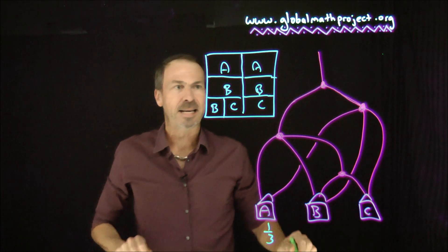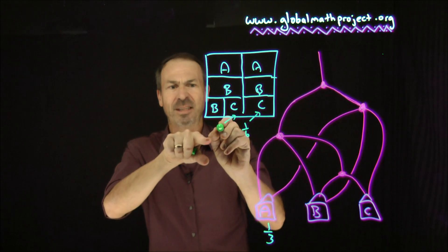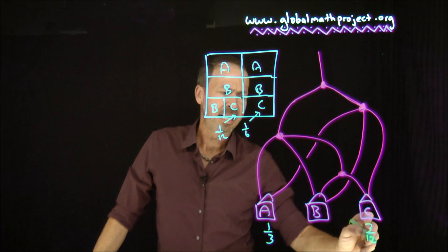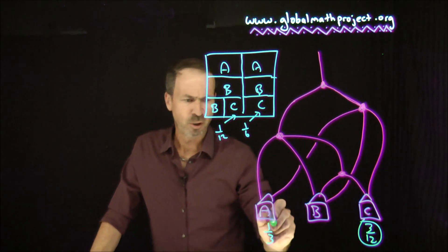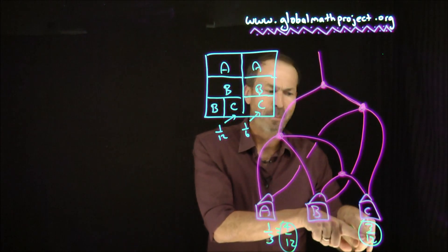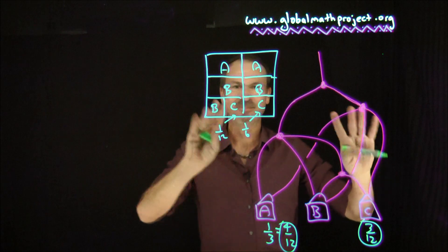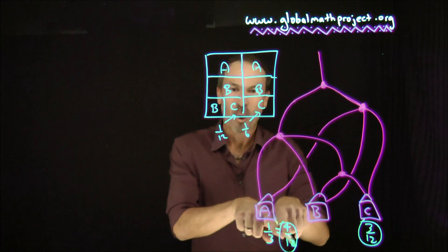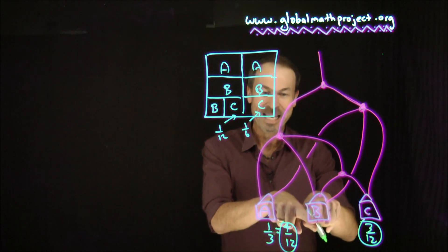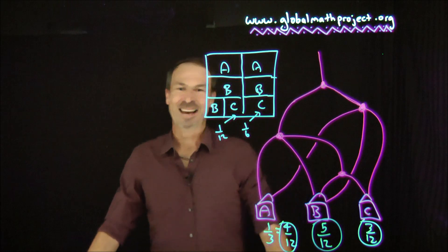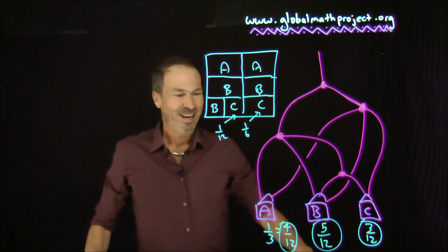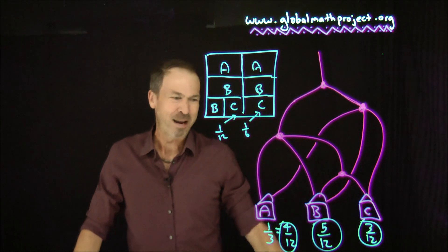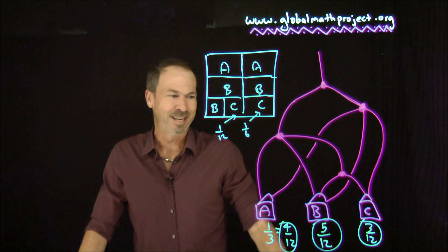Let me work out C next. That's a sixth plus a twelfth — two twelfths plus one twelfth makes three twelfths. And A is four twelfths — a sixth plus a sixth. So the number of people in house C is slightly smaller than in house A: three twelfths versus four twelfths. Three twelfths are in C and four twelfths are in A, so seven twelfths are not in house B, which means five twelfths must be in house B. So the answers are three twelfths, four twelfths, five twelfths — pretty close to each being a third, just slightly more in B and slightly less in C.